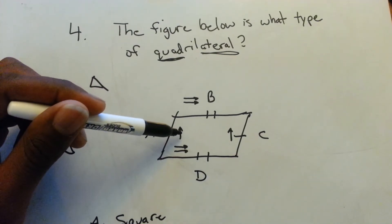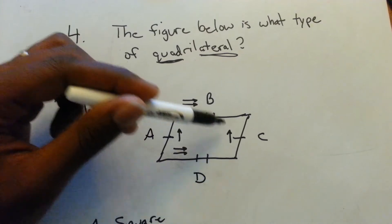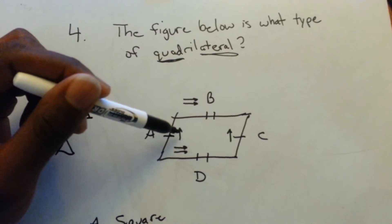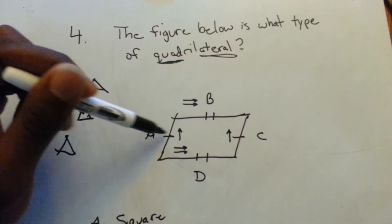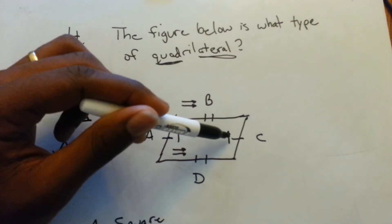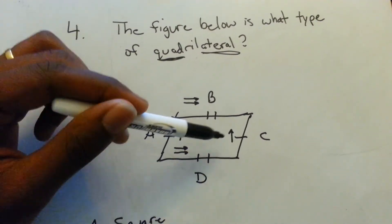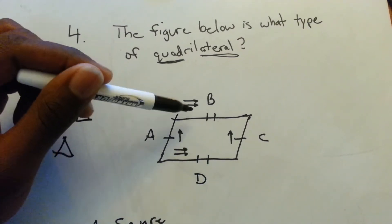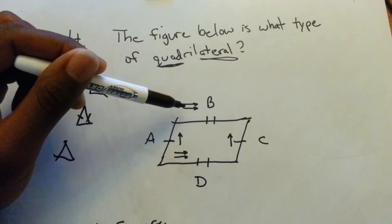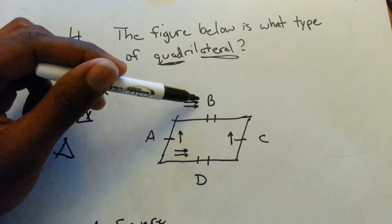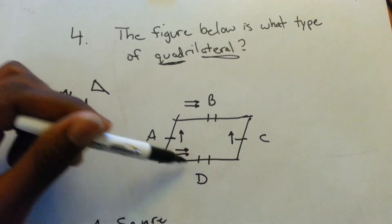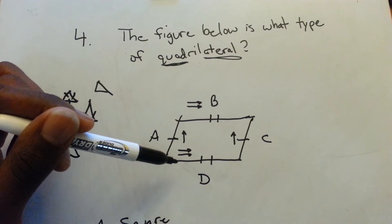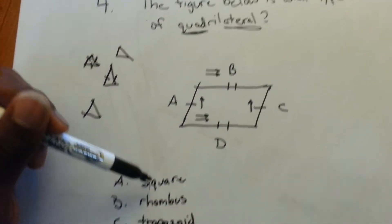When you see arrows on a figure diagram, that means those sides are parallel. Side A and side C each have one arrow, so they are parallel — it's like a matching game. Side B and side D each have two arrows, so B and D are also parallel. So we have two sets of parallel sides.